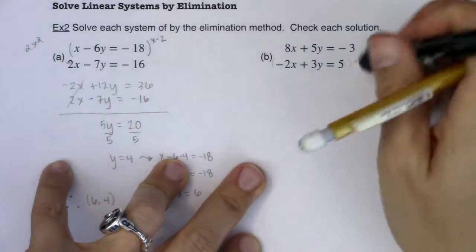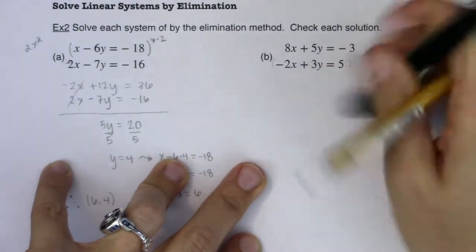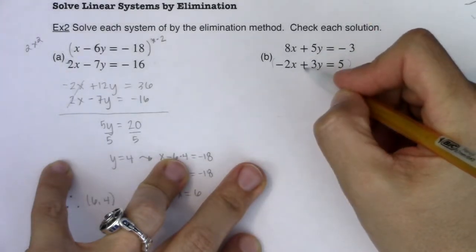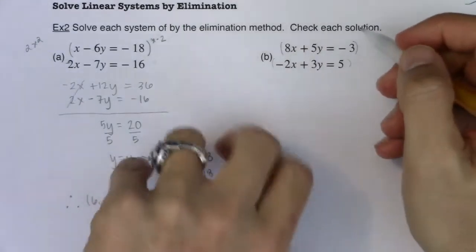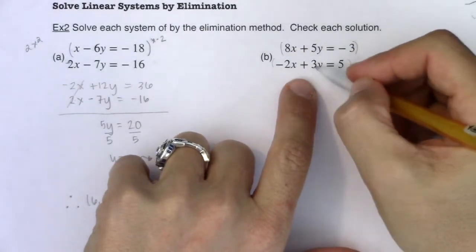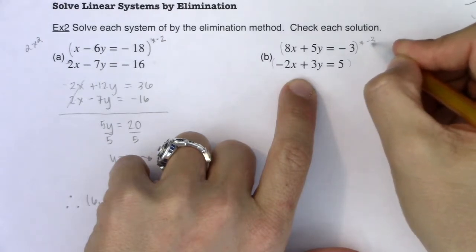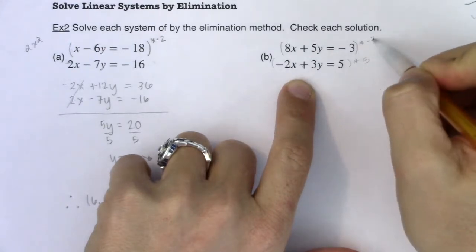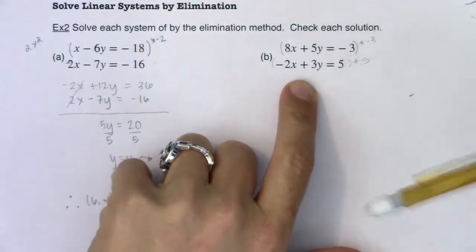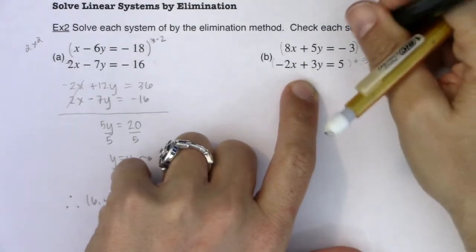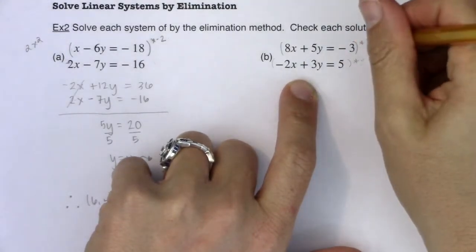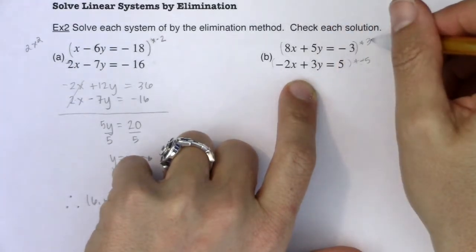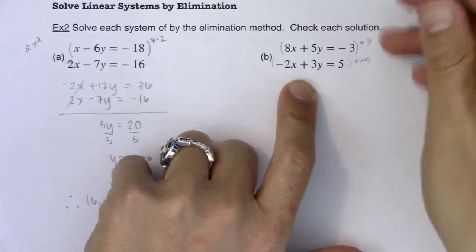Let's say you're really hard set on, you're like, nope, I'm going to eliminate the y's. That's what I want to do. If I wanted to eliminate the y's, they don't have opposite signs right now. So that's kind of a bummer, but I can fix that. We've got a 5 here and a 3 here. So I could multiply this one by negative 3 and I could multiply this one by 5. That would give me a negative 15y on the first equation and a positive 15y on the second. I could also, if I wanted to, I could have multiplied this one by 3 and this one by negative 5. Then I would have a positive 15y on the first equation and a negative 15y on the second equation.